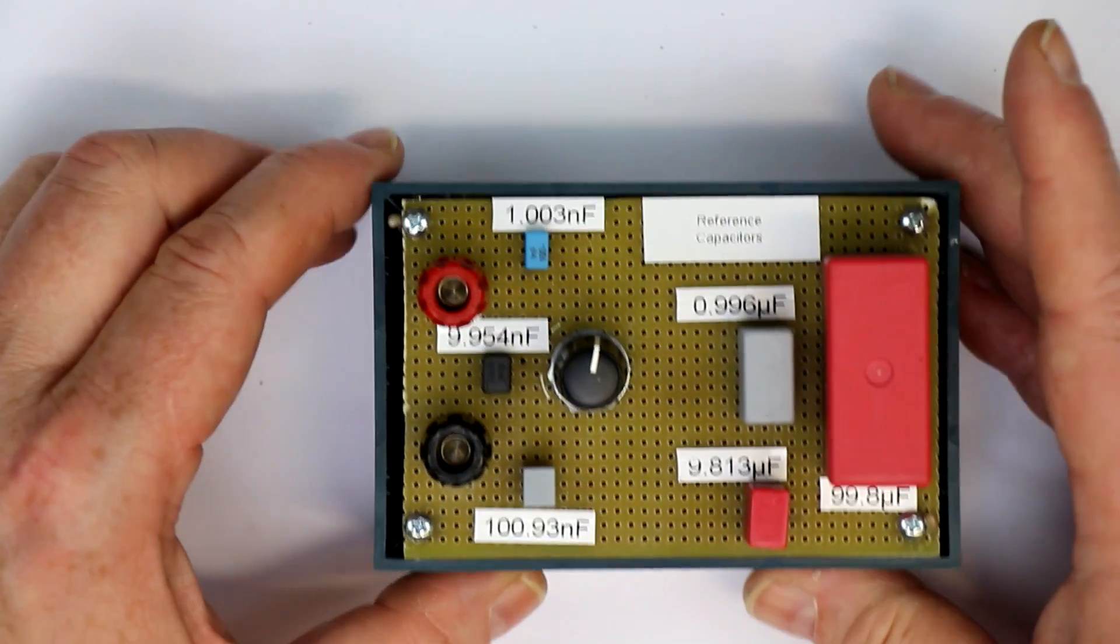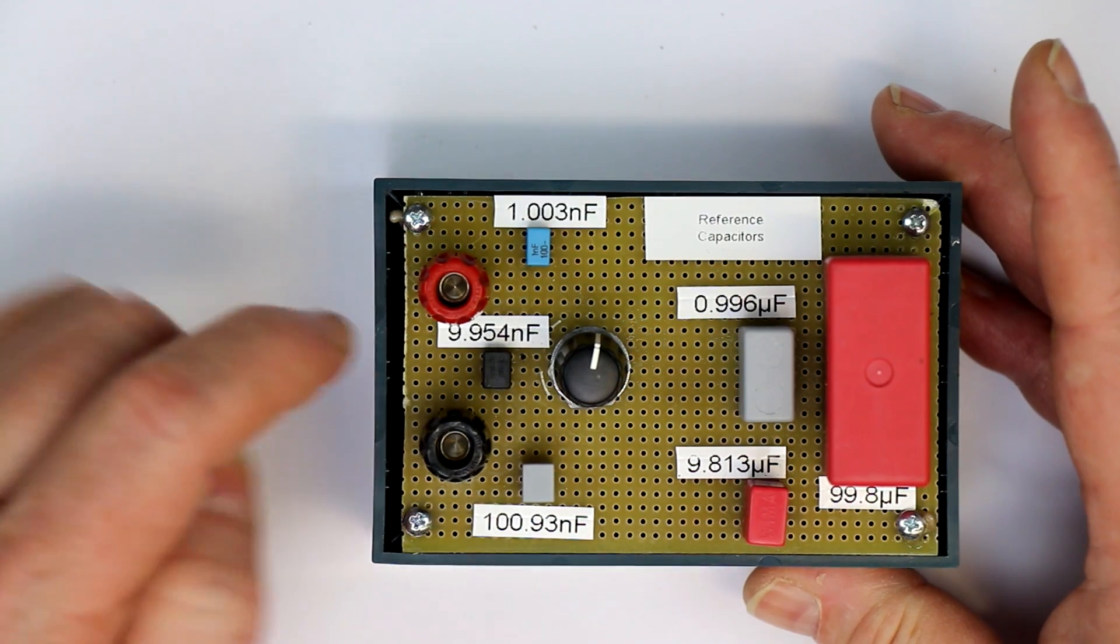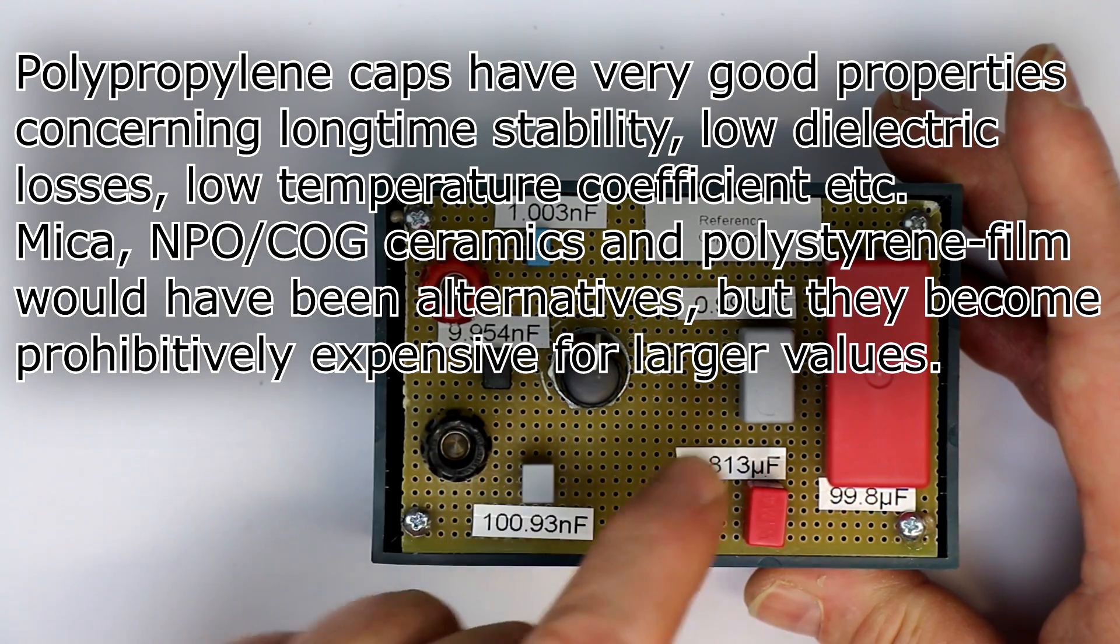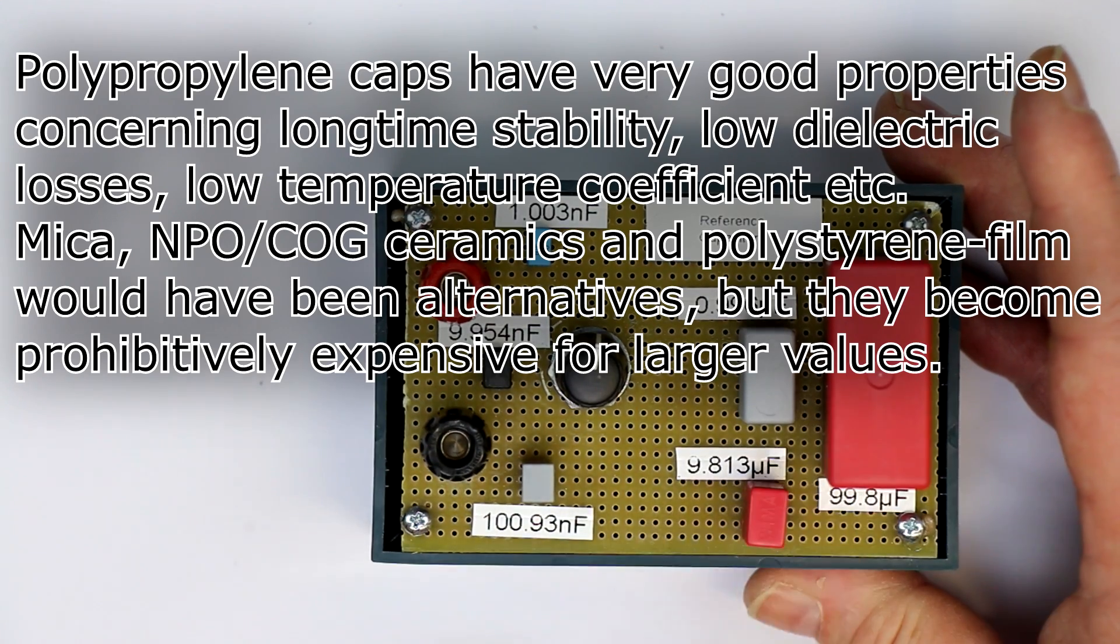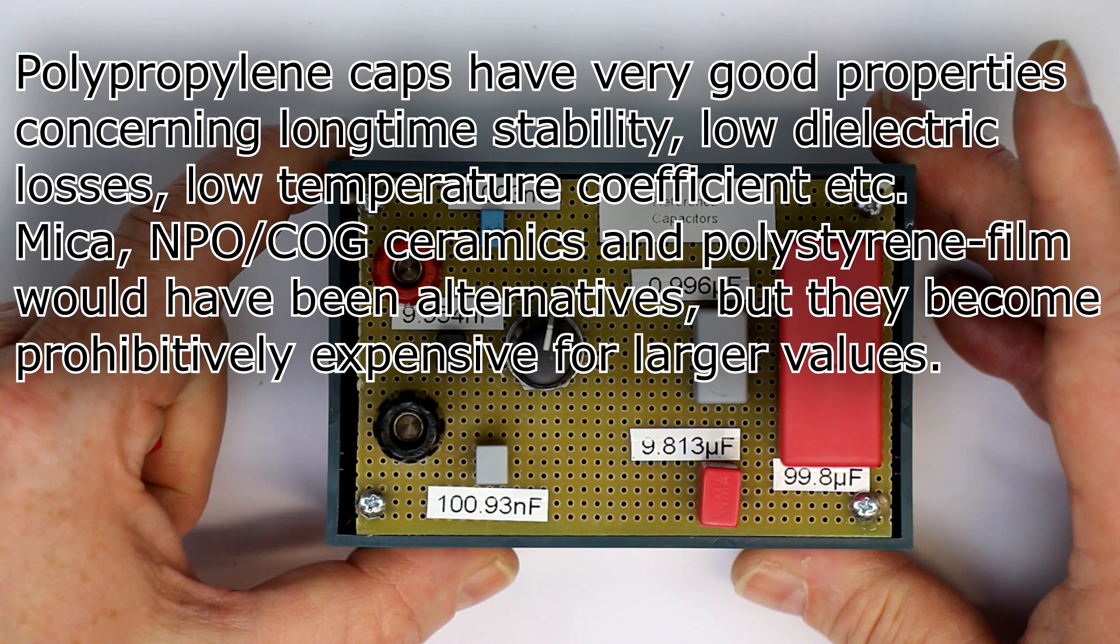And goes up to the unbelievable value of 100 microfarad. Now most of them are polypropylene up to 100 nanofarad. Even the one microfarad is polypropylene, and the two biggest ones, they are mylar ones.